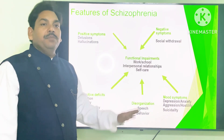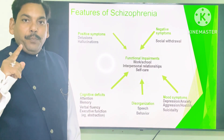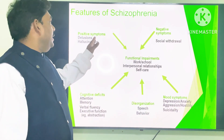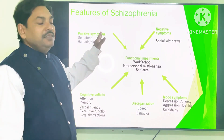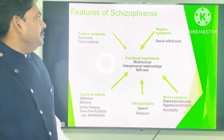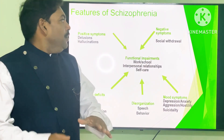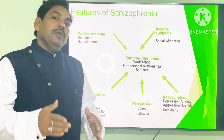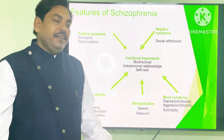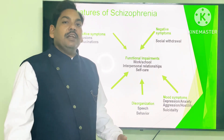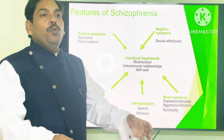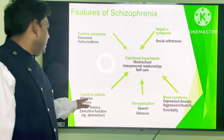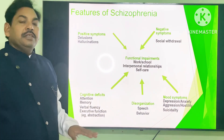Hallucinations means false sensory perception. Delusions and hallucinations are positive symptoms. Negative symptoms include social withdrawal — the person withdraws from society and does not like to be present in a group or family setting. Cognitive symptoms also occur.